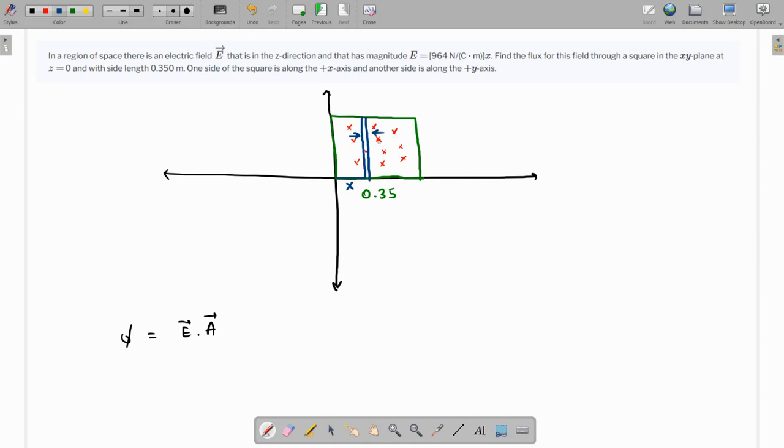This is the width DX and we are going to assume that in this small width DX the electric field is going to be constant. So we are going to find the flux in this strip which is going to be E dot DA. DA is the small elemental area.